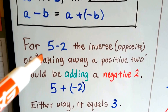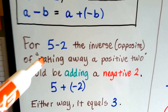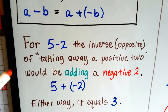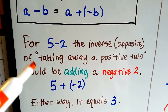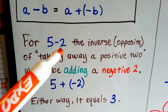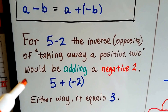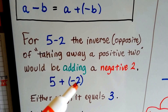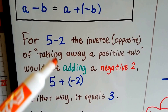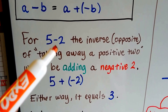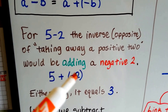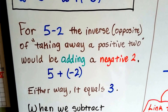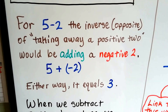So for 5 minus 2, the inverse — the opposite of taking away a positive 2 — would be adding a negative 2. This is taking away a positive 2; now we add a negative 2. Either way, it's going to equal 3.